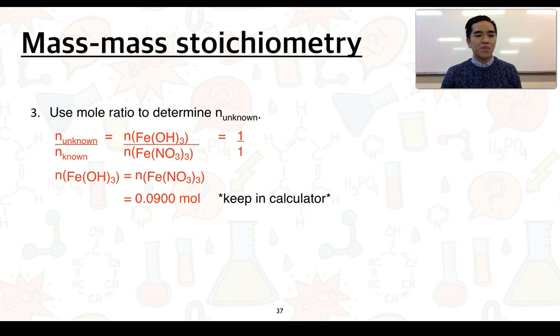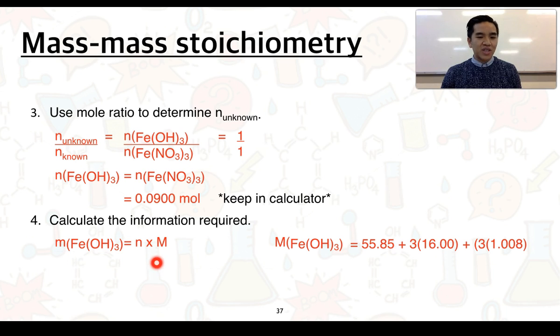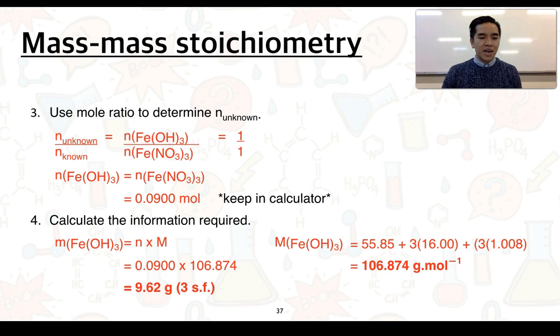And then, now that we know the number of moles of our unknown, we can now solve for the mass of our unknown. So, in order to do that, we need to use this formula here. The mass is equal to the number of moles times the molar mass. Over here, you can see the working out to determine the molar mass of iron-3 hydroxide. So, you've got the molar masses of iron, 3 oxygens, and then 3 hydrogens. We're going to substitute this molar mass into our equation. Again, keeping this answer in your calculator. And then, we should end up with an answer of 9.62 grams written to 3 sig figs.